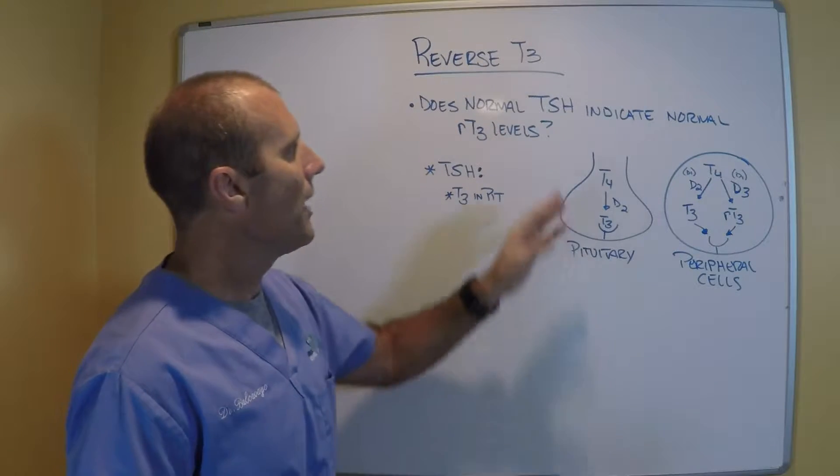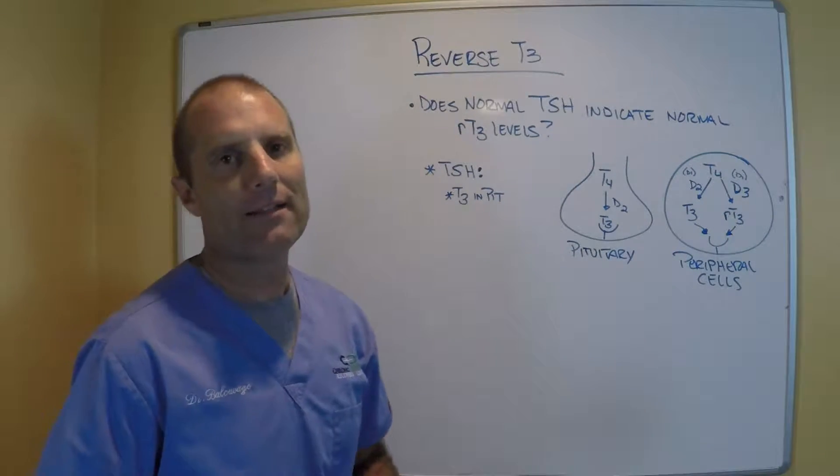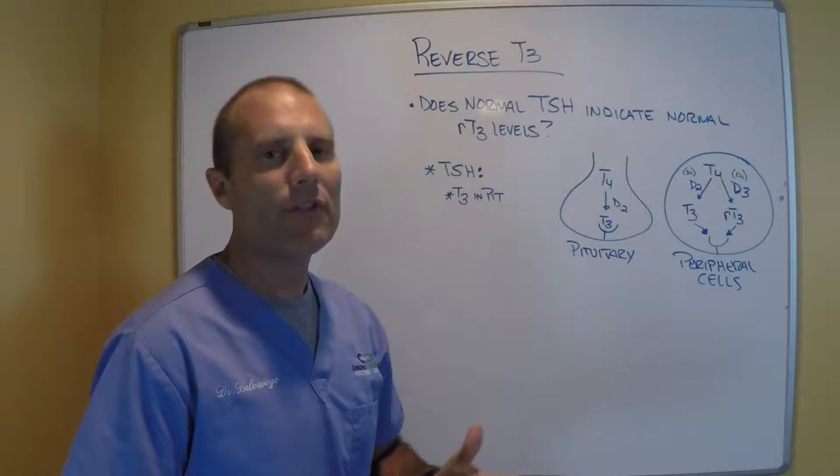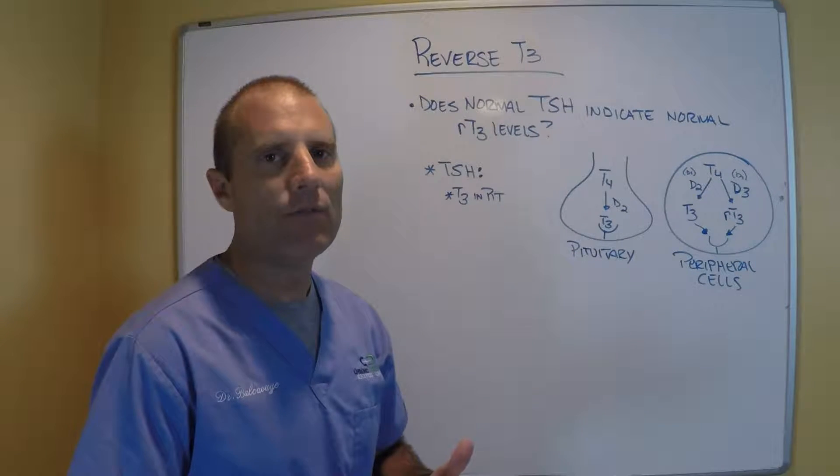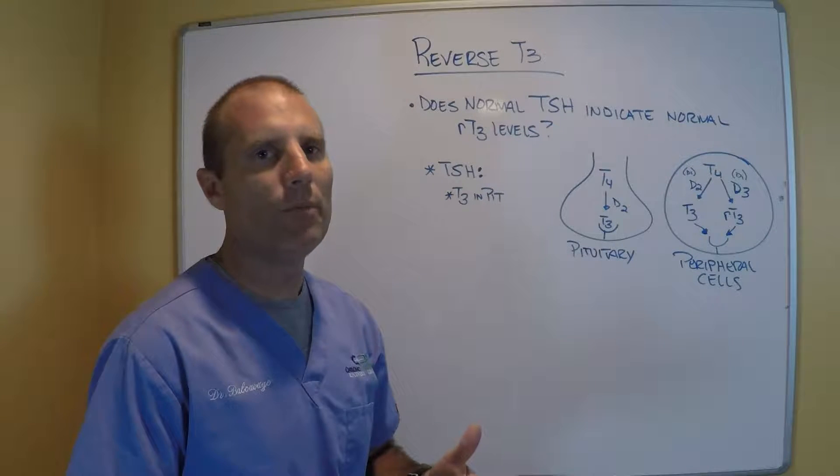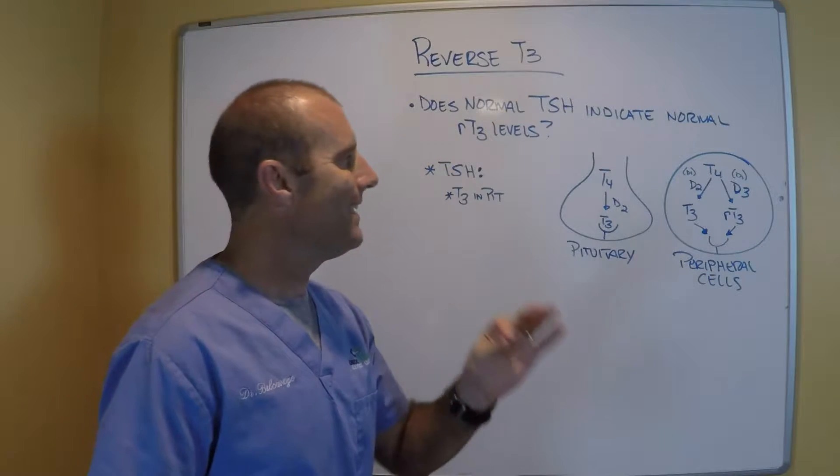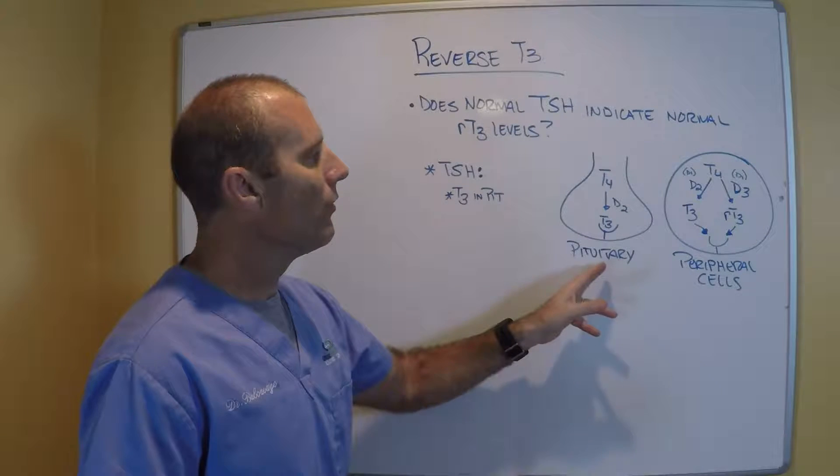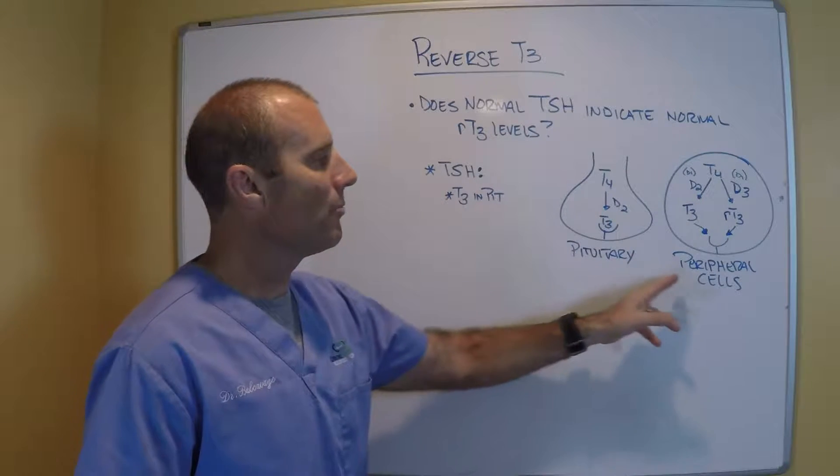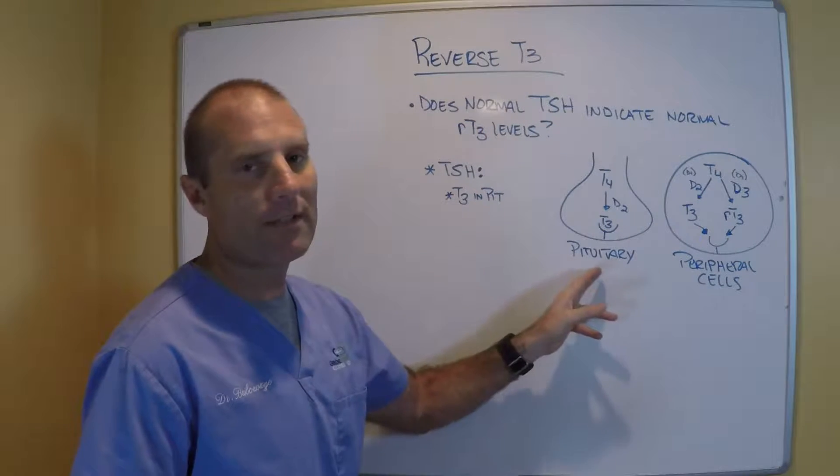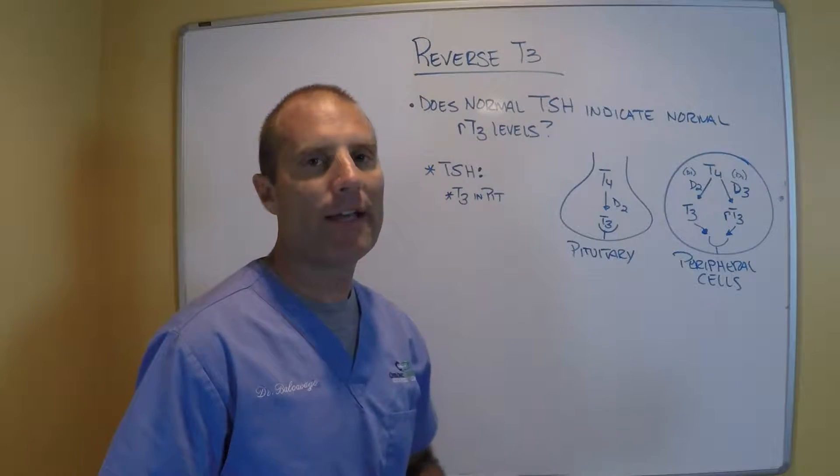So the doctor was incorrect in telling the patient that if the TSH is normal, they didn't need to run reverse T3 because it would be normal, because TSH does not represent what's happening in the peripheral cells. It only represents what's happening at the pituitary gland.